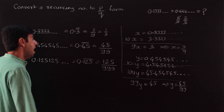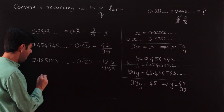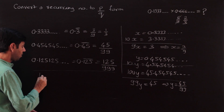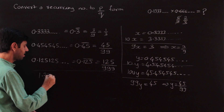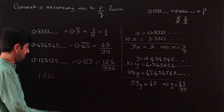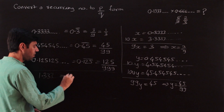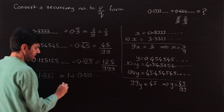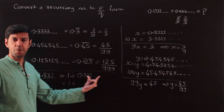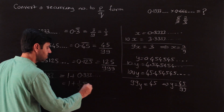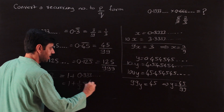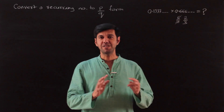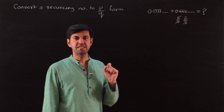If there is an integral part, that is not a problem at all. For 1.3333..., the integral part and decimal part can always be separated. I know 0.3333... is 1/3, so 1 + 1/3 = 4/3. An integral part does not create a problem.